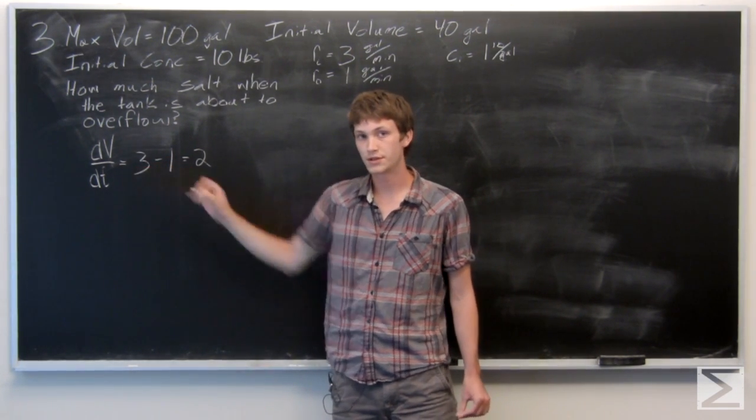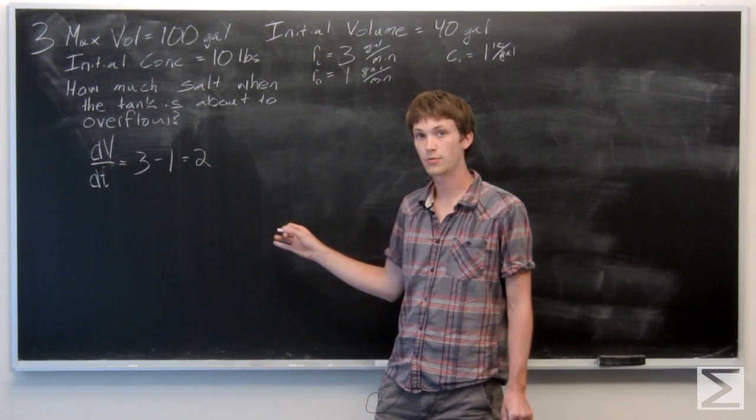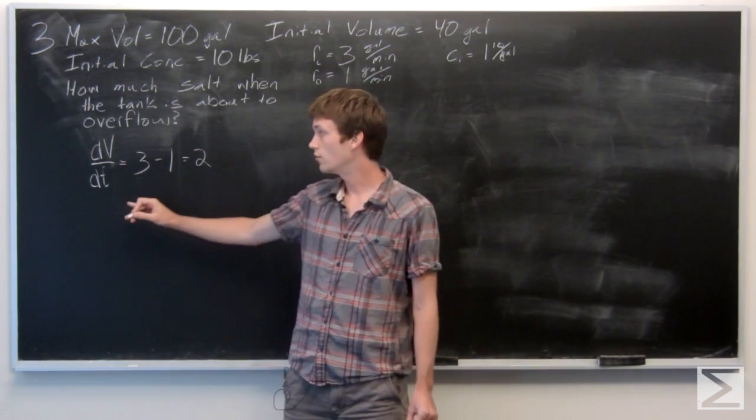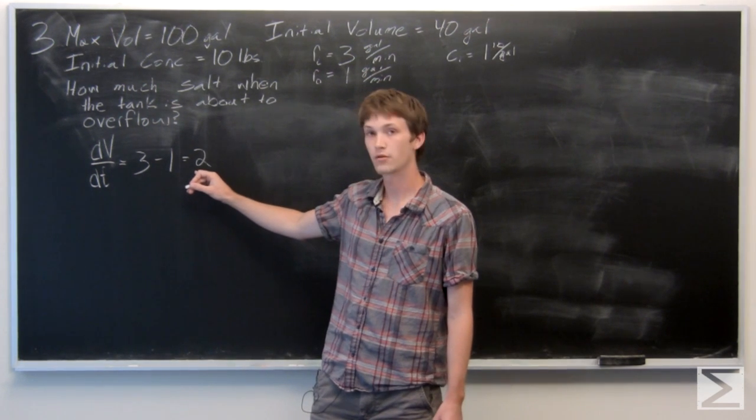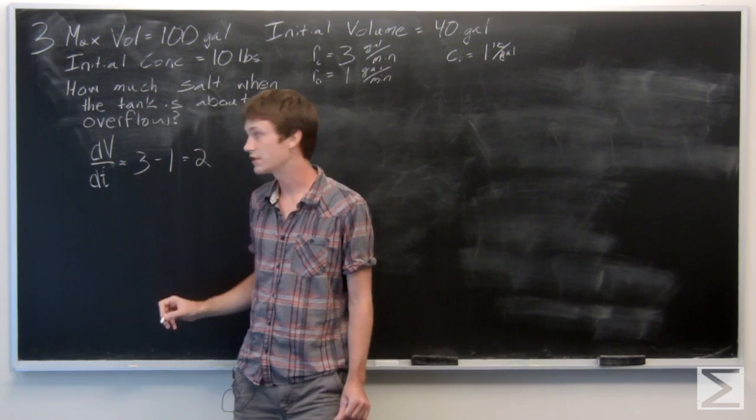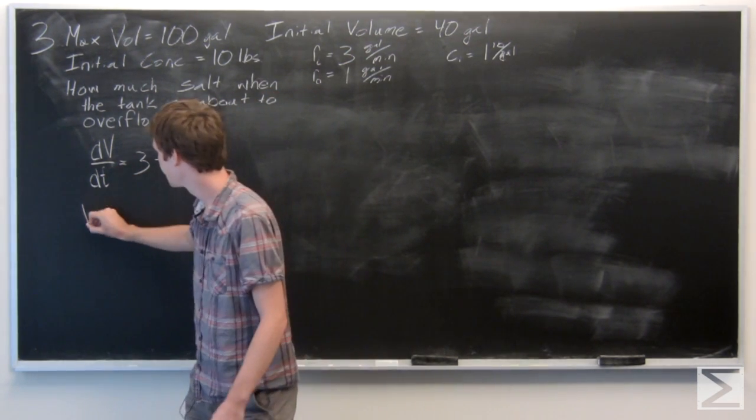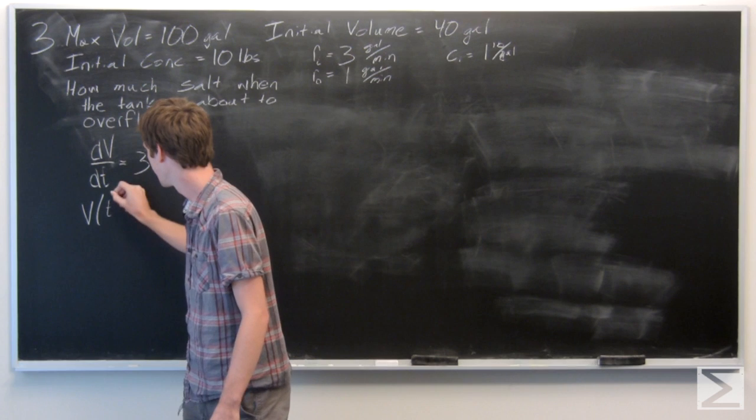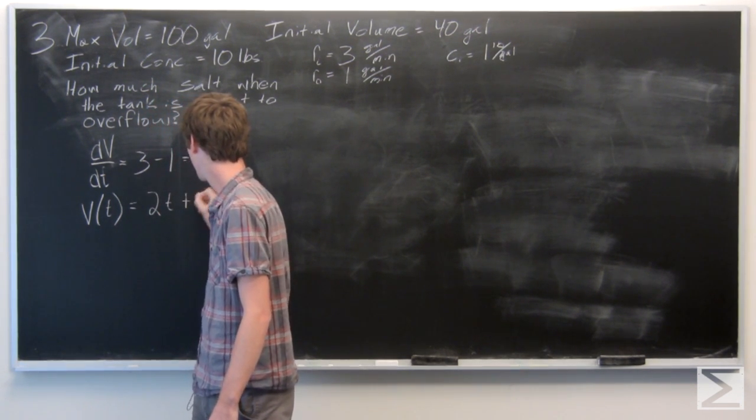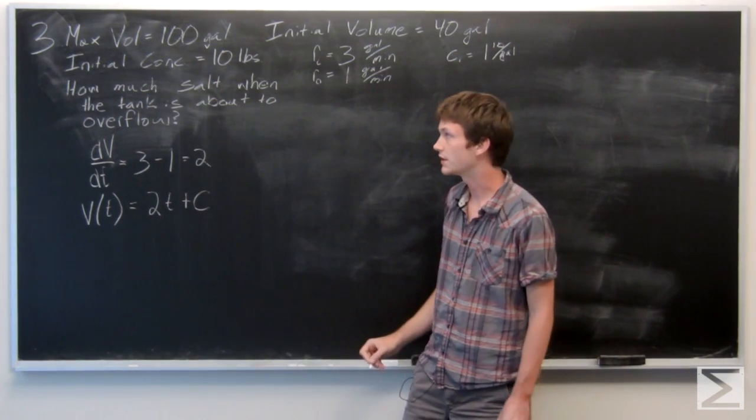Now, we want an equation in terms of v at any point in time, but we know how to solve this. So we'll integrate, or anti-differentiate, and we'll get our volume at any given time. So we get v of t equals 2t plus c.